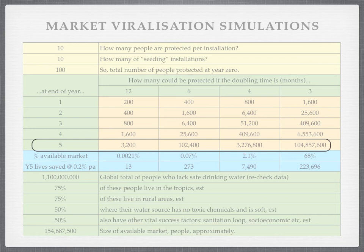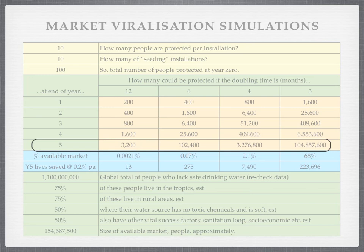If you could reduce the doubling time from six months to four months, the number of people protected after five years would be about 3 million, and about 7,500 lives would be saved — now that's getting ambitious. And if you could reduce the doubling time to three months, you could actually get 104 million people protected — more than half of the available market of people in rural tropical areas where their water source doesn't have toxic chemicals and they have a closed sanitation loop, meaning they have toilets and so on. So potentially in five years you could reach near saturation. That's very much potentially — you could get no viralisation at all, put in 10 installations, protect 100 people, nobody copies it, and you just protect those 100 people for a few decades.